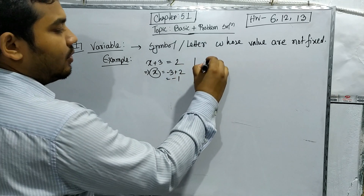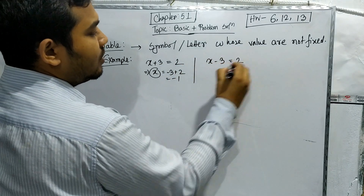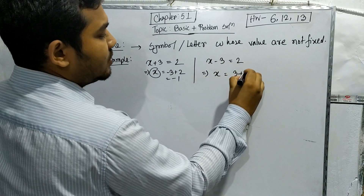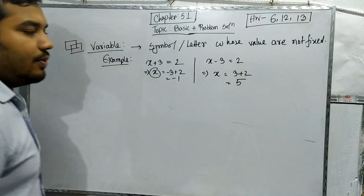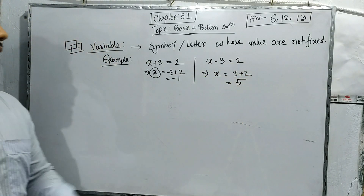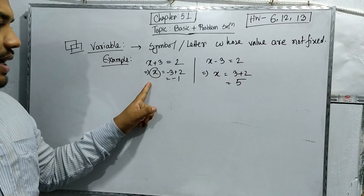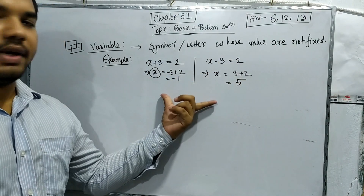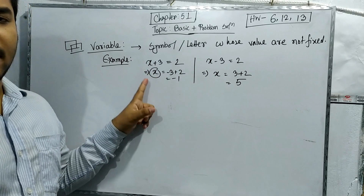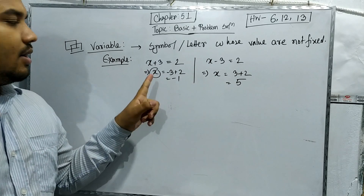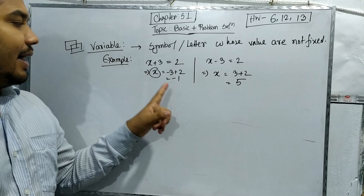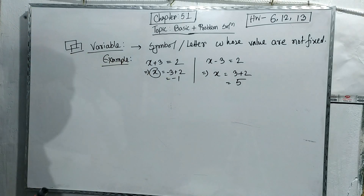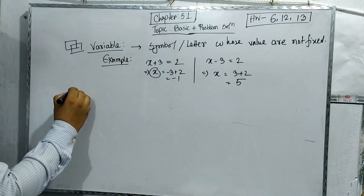For another example, x minus 3 equals 2. Calculating this, x equals 3 plus 2, so x equals 5. Here x equals 5, but in the previous case x was minus 1. So the value is not fixed — it is an unknown thing whose value is not fixed. This is what we call a variable.